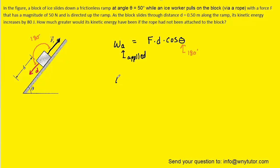We could next go ahead and plug in the applied force, which is stated as 50 newtons, as well as the magnitude of the displacement, which is stated to be 0.5 meters. And then once again, we'll have the cosine of 180 degrees.